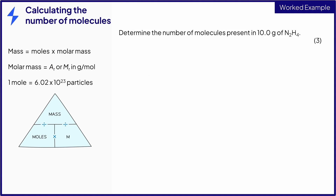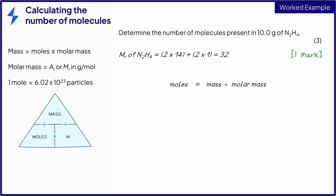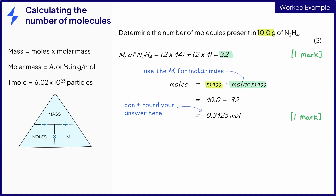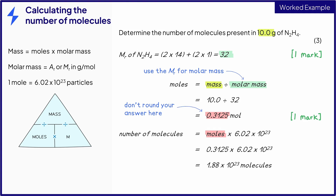In this final example, you are asked to calculate the number of molecules in 10 grams of a substance. To find out the number of molecules, we must first work out how many moles there are. So start off, as we have done in previous questions, by calculating the relative formula mass. Write down the equation to find the number of moles. Substituting the values for mass and molar mass using the relative formula mass that we have just calculated — this is not your final answer, so don't round the answer at this stage. The number of molecules can be calculated by multiplying the number of moles by Avogadro's constant. This gives us our final answer, which we can now round.